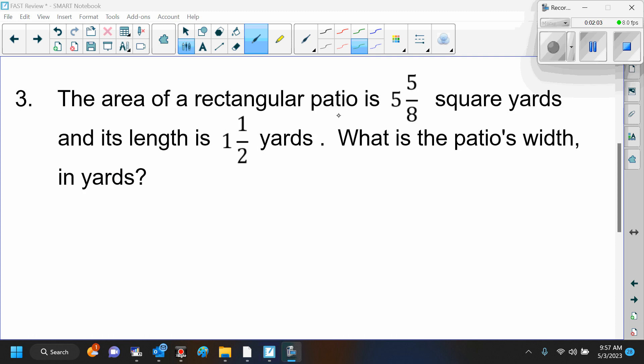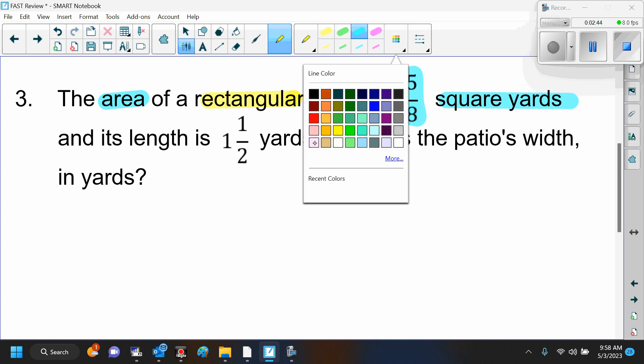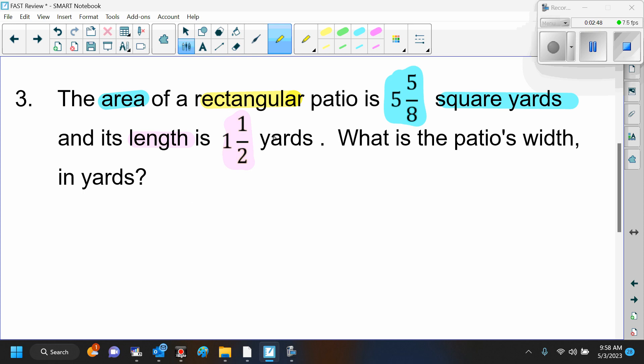Number 3 says the area of a rectangular patio is 5 and 5 eighths square yards, and its length is 1 and a half yards. What is the patio's width in yards? Before you change anything, I would decide what's important here. First of all, what shape is the patio? It's a rectangle. And that rectangular patio has an area of 5 and 5 eighths square yards, and it has a length of 1 and a half yards.